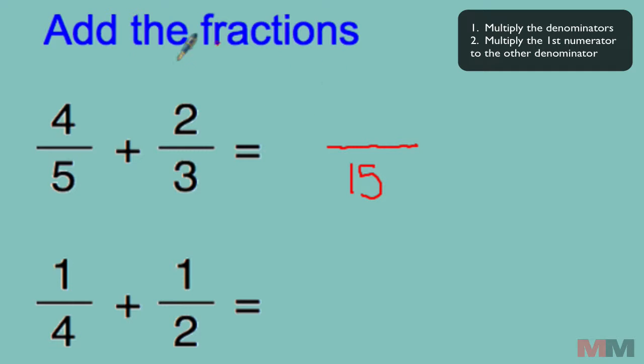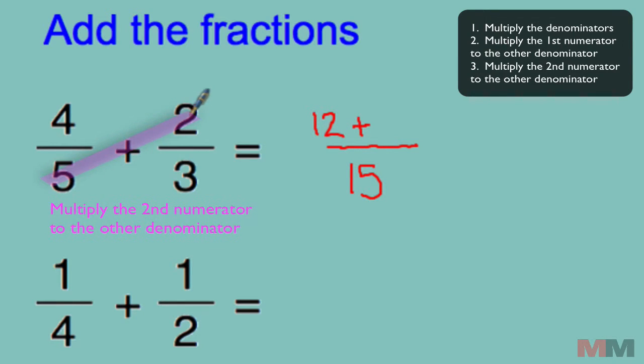Second step: Start with the top left and multiply it diagonally, meaning 4 times 3, and put that result right here. 4 times 3 is 12. Now I'm just going to add that result to the other side. I'm going to multiply that diagonally to the other numerator, to the other denominator, 2 times 5, 10.